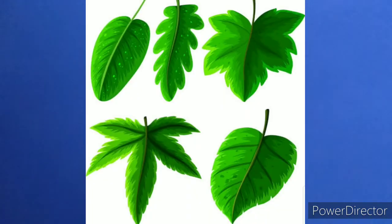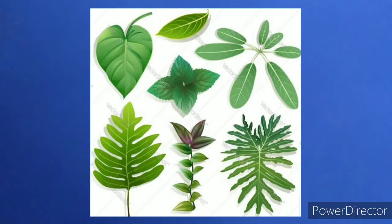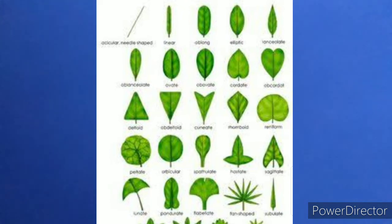Leaves are also the beauty of the plant. The shape and size of the leaves are different. Some are round shape, some are very thin, some are thick. Some edges of the leaves are flat, some are sharp edge, and some are pointed edge. So, shape and size of the leaves are different.